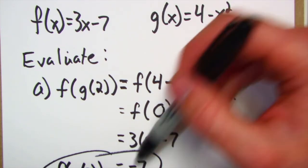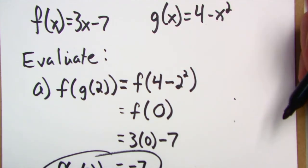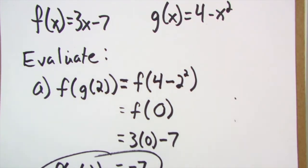And then we took the answer of the g function and now we're putting that into the f function for the x. And so I put that in and I get out a negative 7.